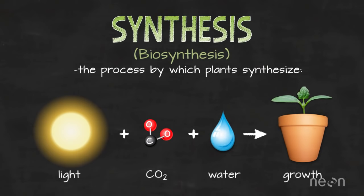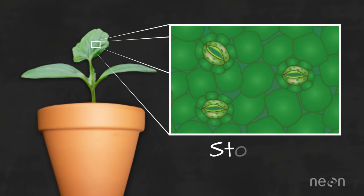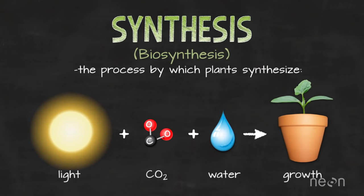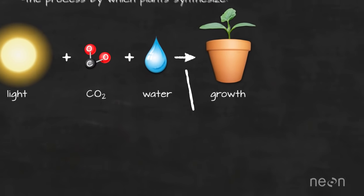To support growth, plants absorb CO2 from the atmosphere through small pores in their leaves called stomata. Using energy from sunlight, CO2 and water are synthesized to create sugar. This sugar is then converted into energy that plants need to grow through a process called respiration.